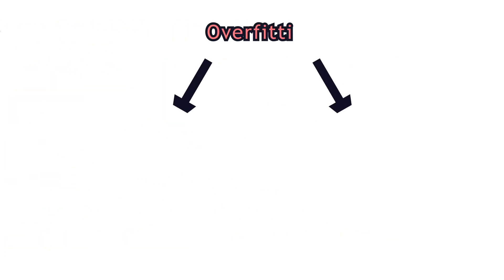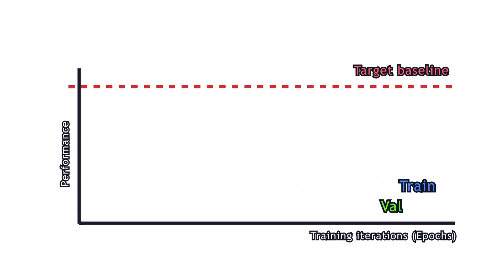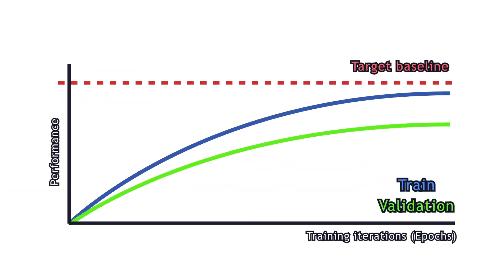You may encounter two different types of overfitting. Either both sets improve simultaneously and then at some point, validation performance starts decreasing. Or both sets improve, but with a wide gap between them.